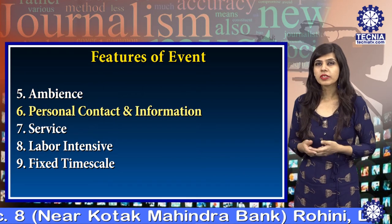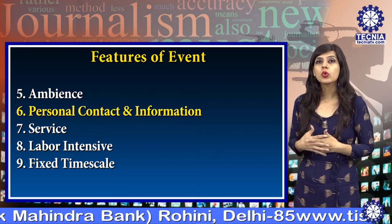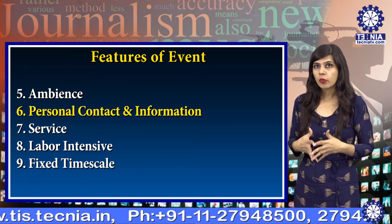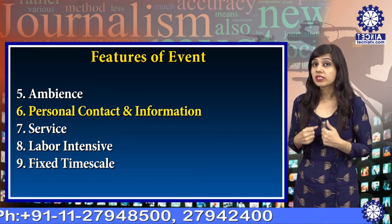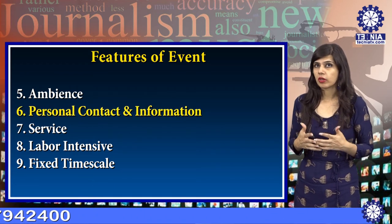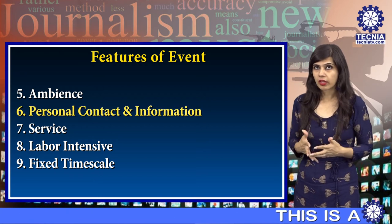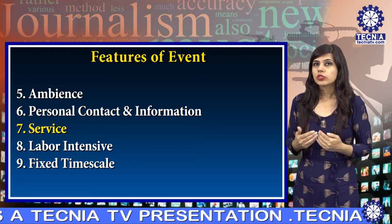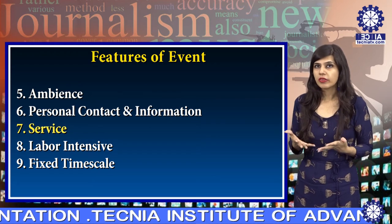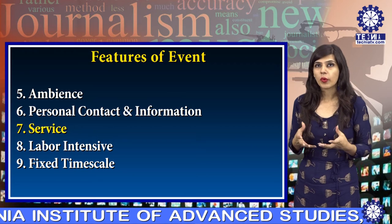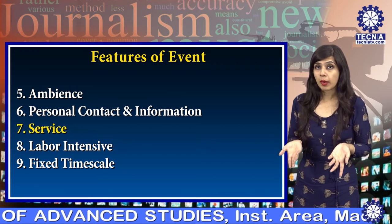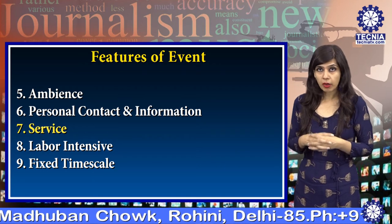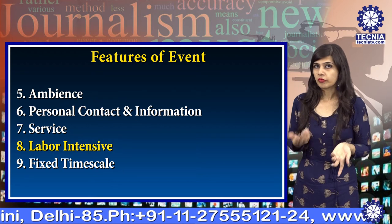The sixth feature is personal contacts — to manage events we need contacts and need to come in contact with people so that we can promote our idea and the actual aim of the event can be delivered through personal contacts. The seventh feature is service — our aim is to deliver information to the public, which is the service we are offering through the event; it can be brand promotion or the launch of a new product in the market.